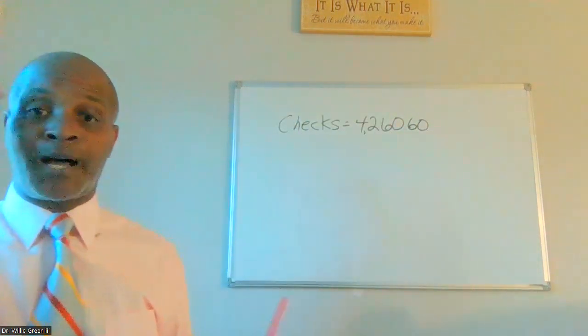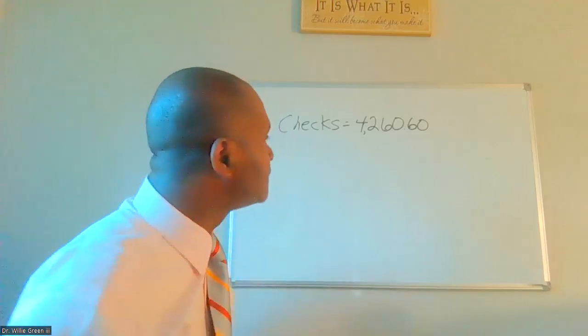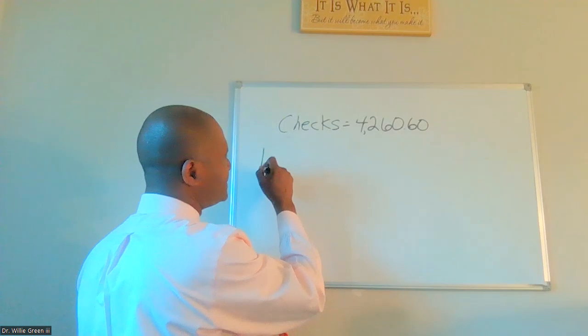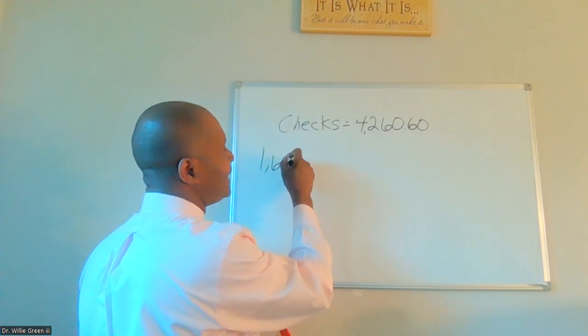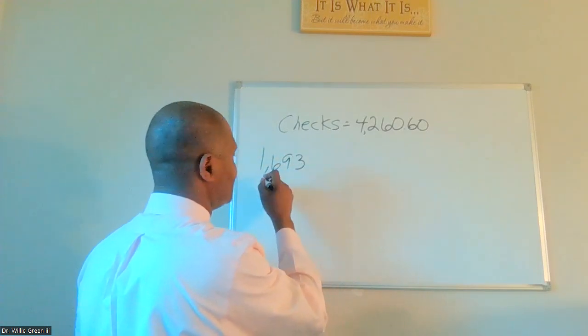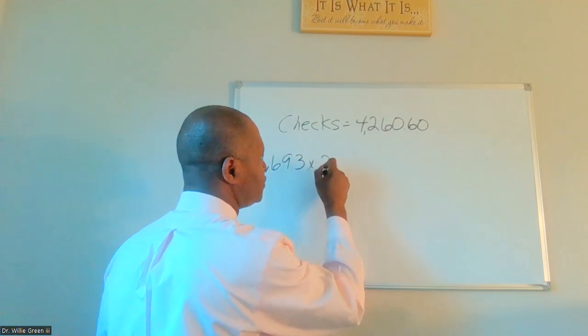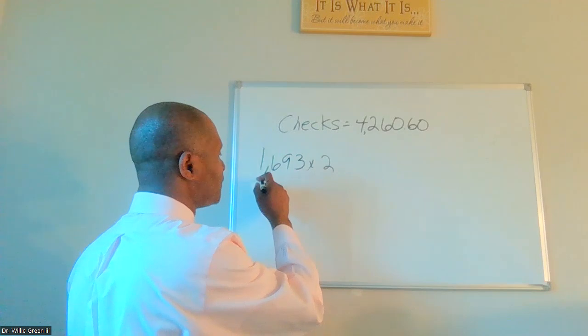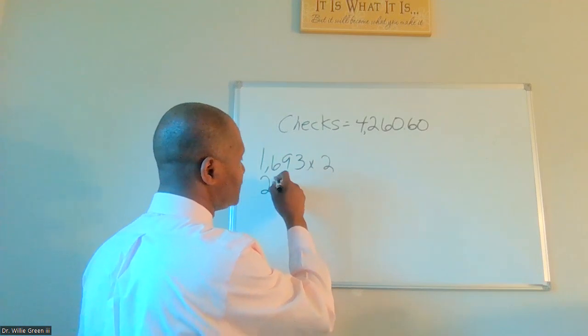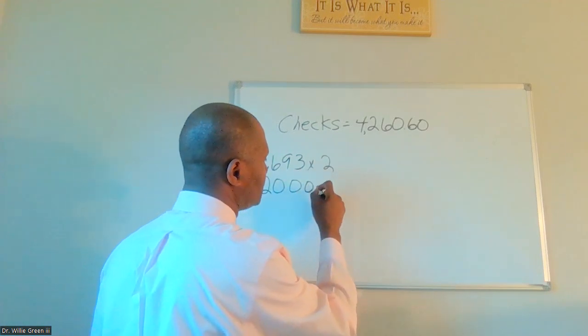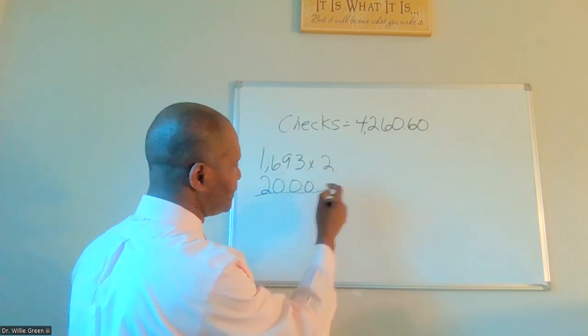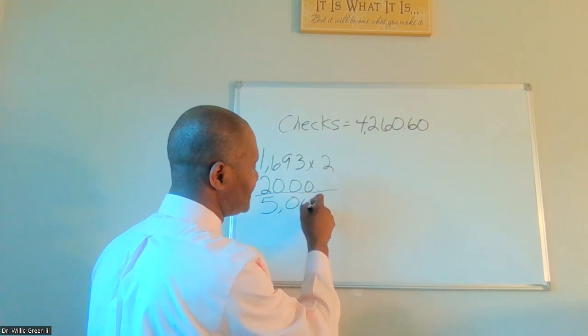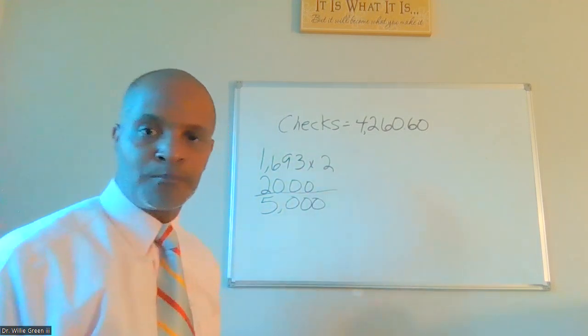So when I put my paycheck in, which is $1,693 I think, times two, and then I'm putting investment income in temporarily about $2,000, it all comes out to approximately about $5,000. I don't remember the exact number, but $5,000 plus.